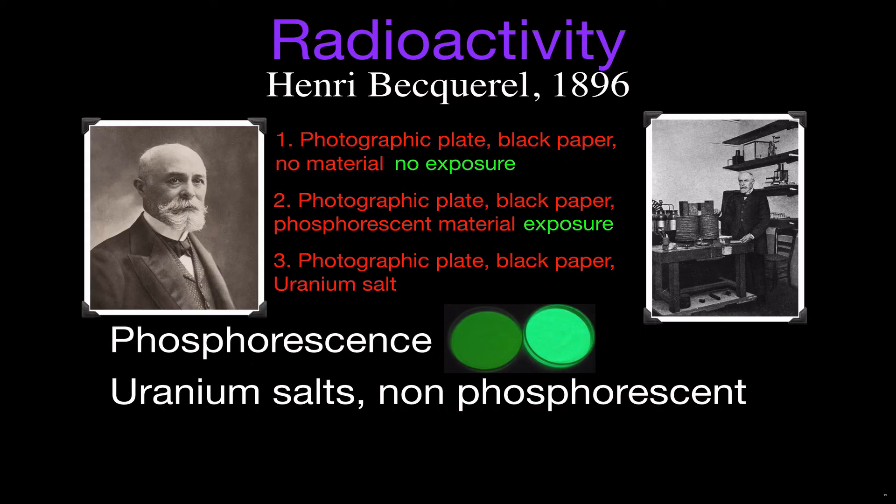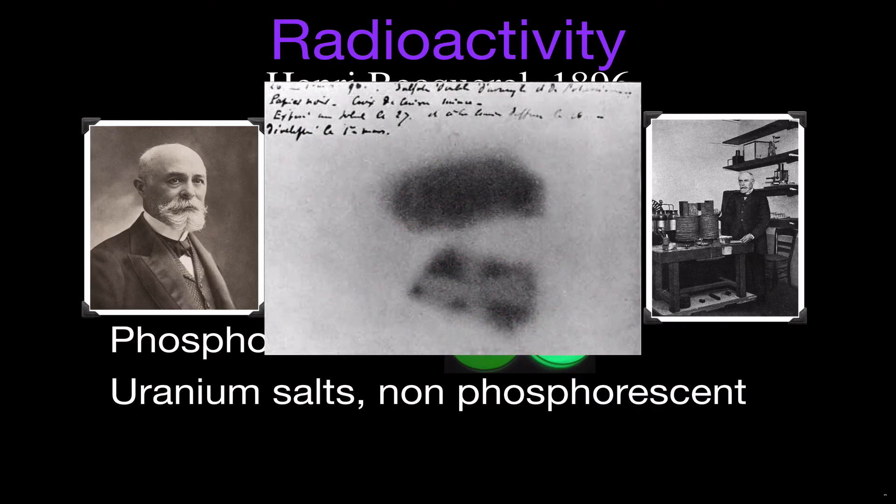And he comes back and finds he has that uranium on the photographic plate wrapped in black paper in his desk. And he's like, well, I'm just going to develop this photographic plate and see what happens. And when he did that, he was amazed to see that there was some exposure on the photographic paper. He saw this image of the uranium. It hadn't been outside. It hadn't been exposed. So he thought, OK, this isn't phosphorescence.